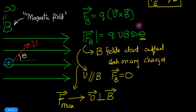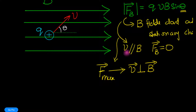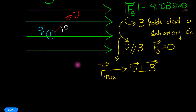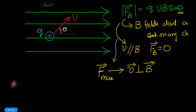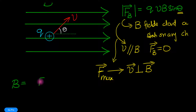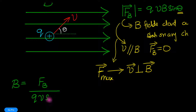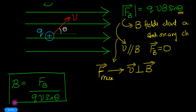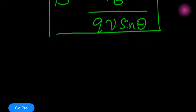Now that we've described what the magnetic force looks like, it's time to define the magnetic field. Taking that equation, the magnetic field B can be written as the magnitude of the force F_B divided by q times v times sine theta. That is the definition of the magnetic field.